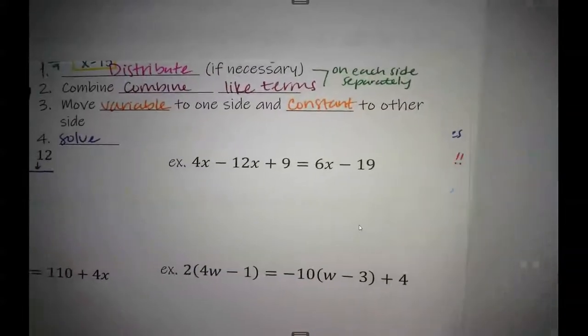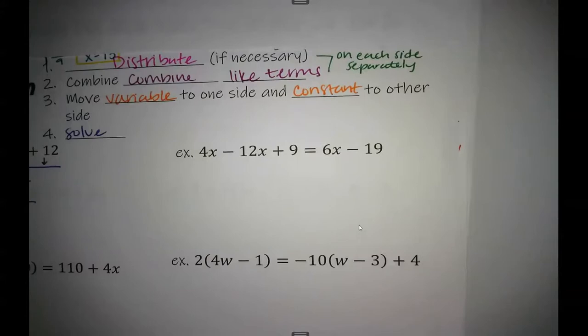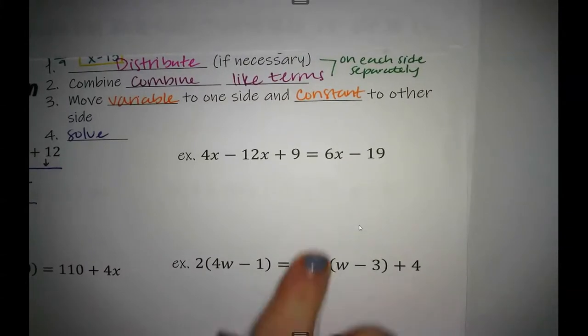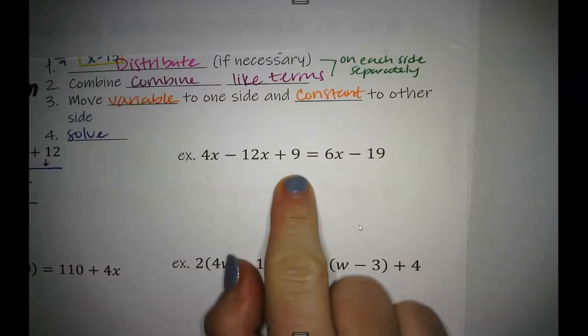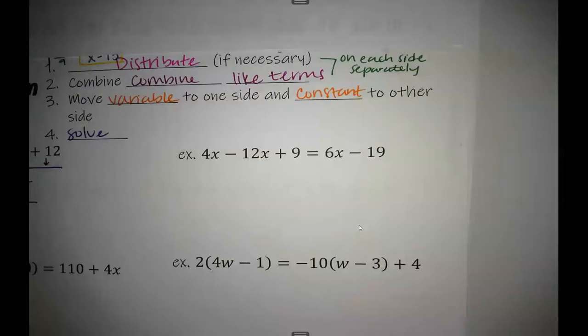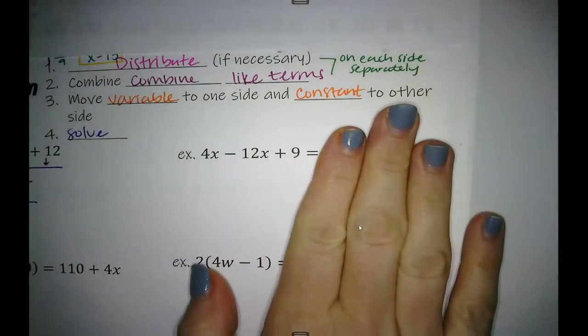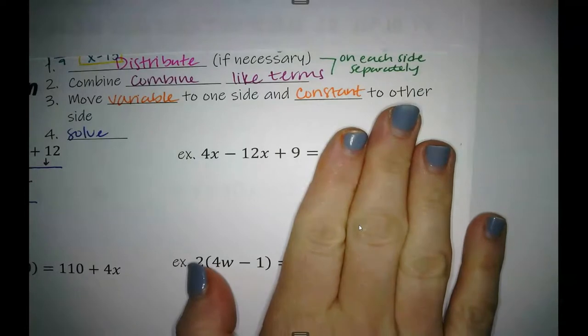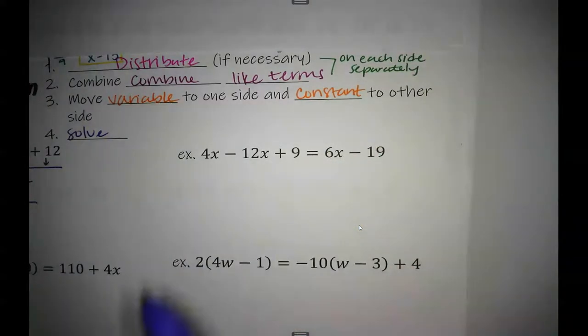All right, another example. 4x minus 12x plus 9 equals 6x minus 19. Do I need to distribute on either side? No, there's nothing to distribute. Do I need to combine like terms on either side? Yes, I do, because I got these two x's right here.